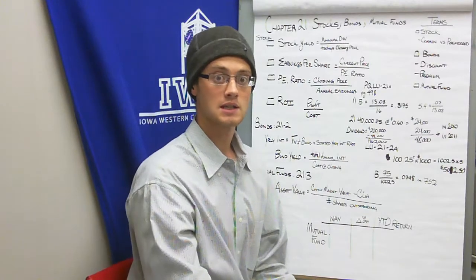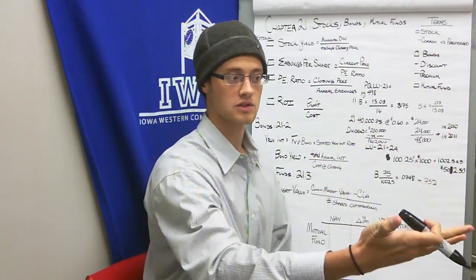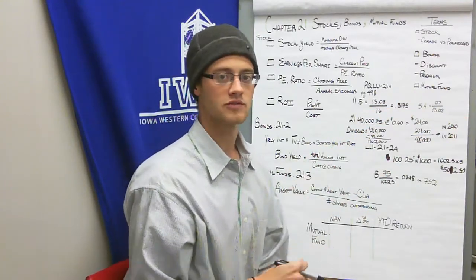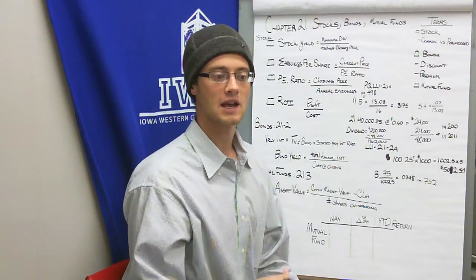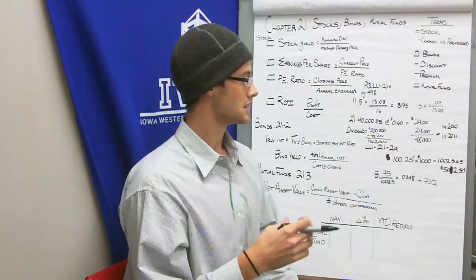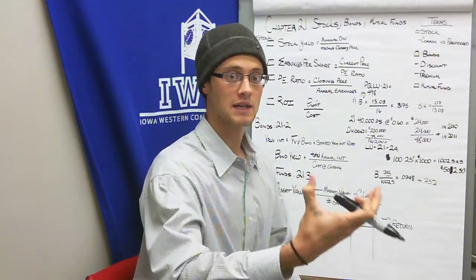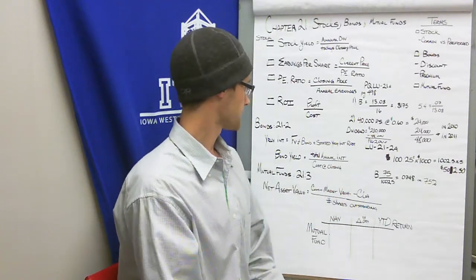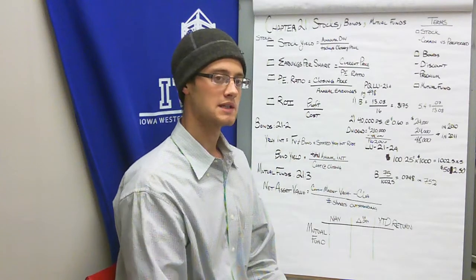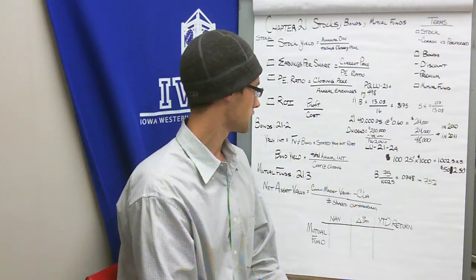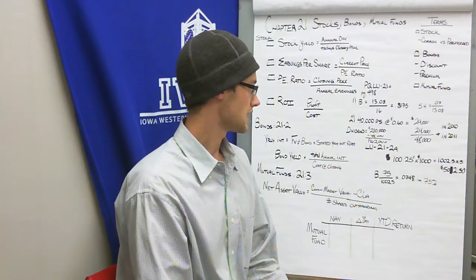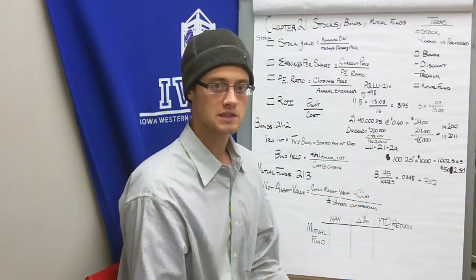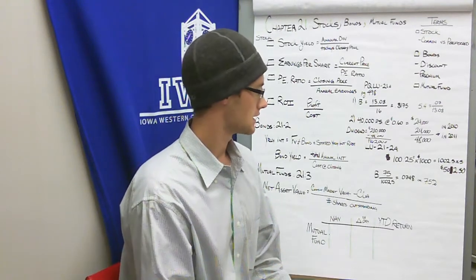Another way to invest is with bonds. Unlike stock, where you own part of the company, a bond is more like a loan — the company pays you a guaranteed interest rate. Companies like Coke or Disney may choose bonds because they want capital without diluting ownership through more shareholders. For bonds in section 21-2, the yearly interest equals the face value of the bond times the stated yearly interest rate. The bond yield is the total annual interest divided by the closing cost.